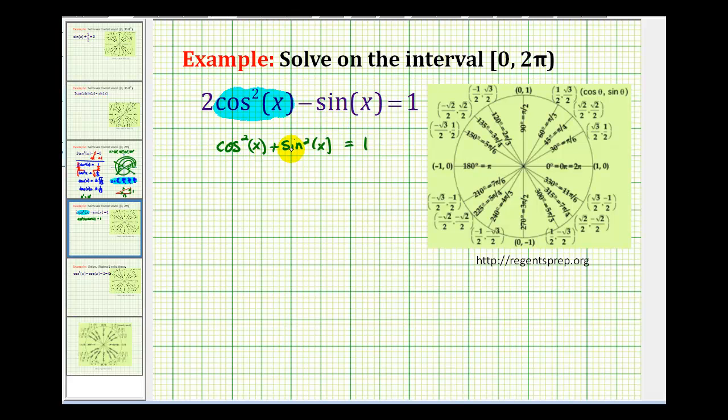Remember cos²(x) + sin²(x) = 1. So if we subtract sin²(x) on both sides, we can replace cos²(x) with 1 - sin²(x). So let's go ahead and do that.